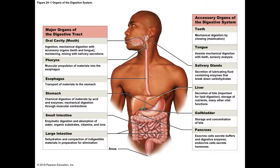Basically, the digestive system is one big muscular tube. It starts in the oral cavity, which is an expanded area of the muscular tube. It moves down to a long tube called the esophagus, then into an expanded tube called the stomach, then into a really long 21-foot tube called the small intestine, then into the rectum. You're ingesting fluids and food through the mouth.